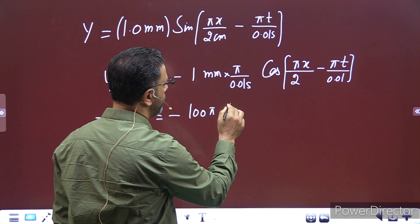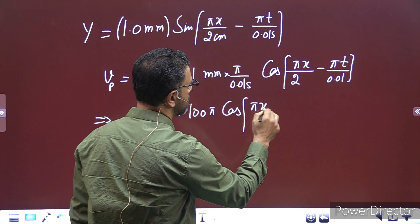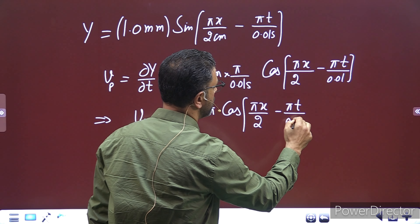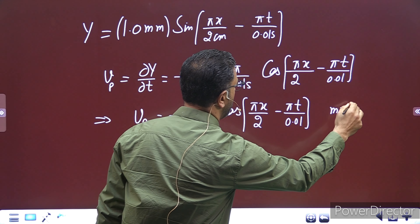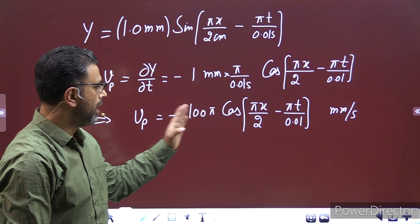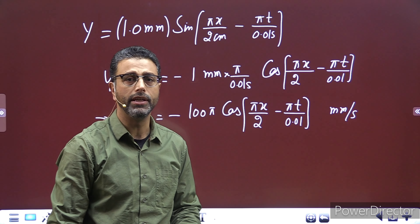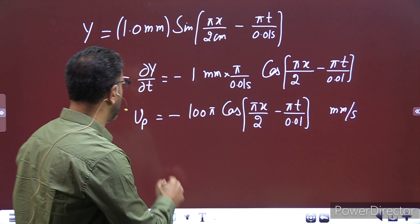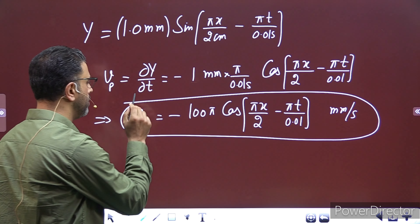So vp = −100π × cos(πx/2 − πt/0.01) mm per second। यह हमारे पास general equation आगई for particle velocity। अब हम किसी भी particle की velocity निकाल सकते हैं at any time t — x और t का value substitute करना है।